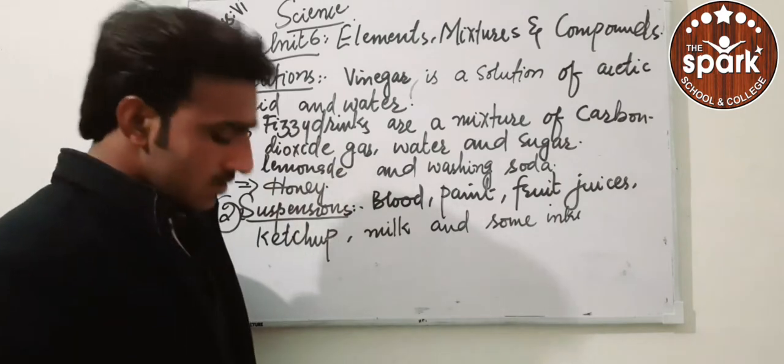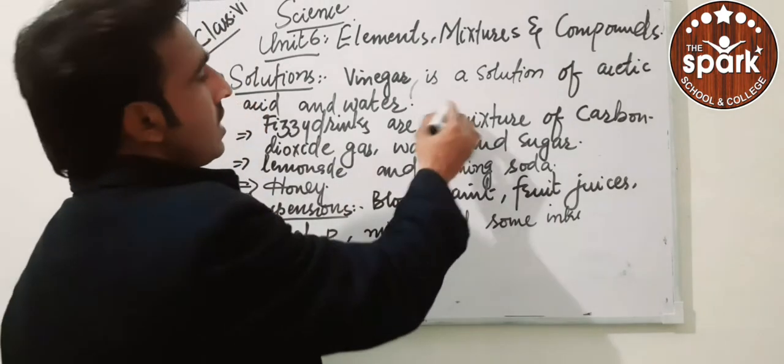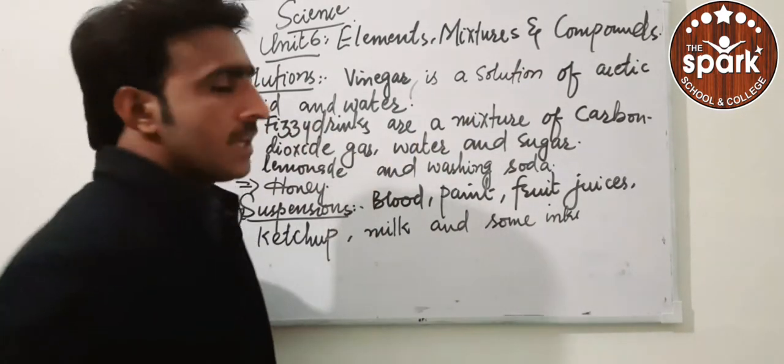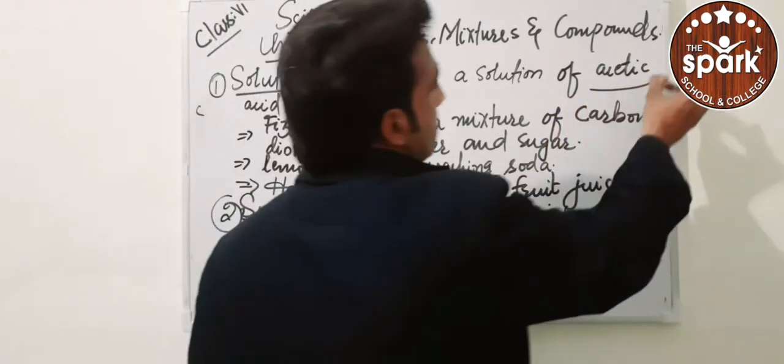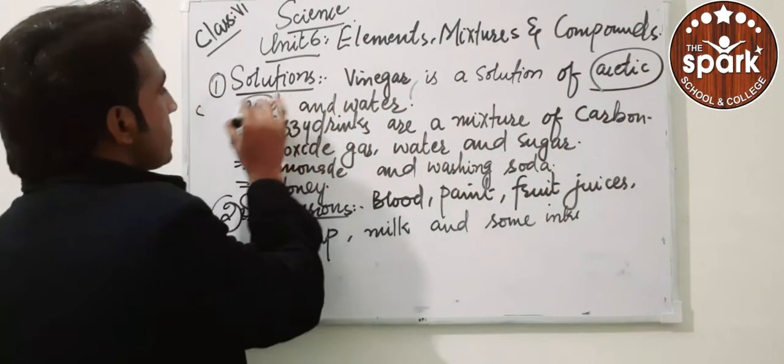So the first one is solutions. Solution means vinegar is a solution of acetic acid and water. Vinegar is a solution made from acetic acid and water mixed together.